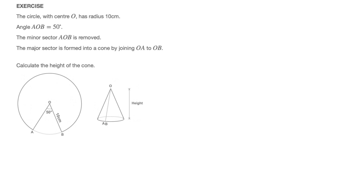It's with this major sector that we create the cone, done by joining OA to OB. Hopefully you can picture actually doing that, perhaps with a sheet of paper. If you were to cut out a circle and then cut out this minor sector, joining OA to OB would lead to a cone looking like this one. Finally, we need to calculate the height of the cone.